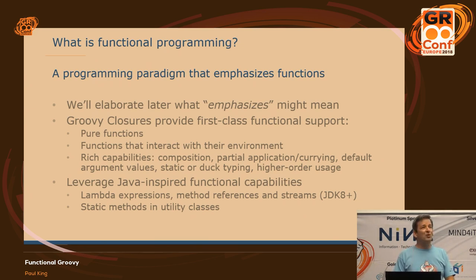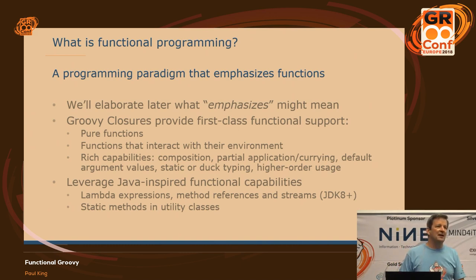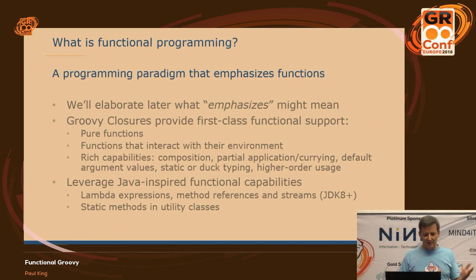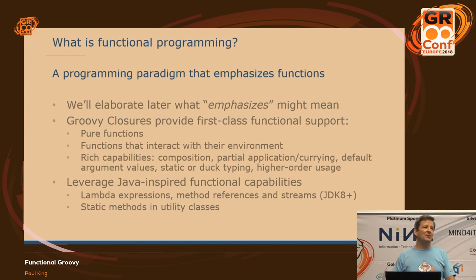Groovy has had closures since version one and closures support first-class functionality. So we can create pure functions. Closures can interact with their environment and be impure — sometimes that's a good thing, sometimes a bad thing. And there's a whole bunch of capabilities from Java-inspired features, some from JDK8, that we can leverage as well: lambda expressions, method references, streams — we can leverage all of that if we're trying to adopt a functional style in Groovy.